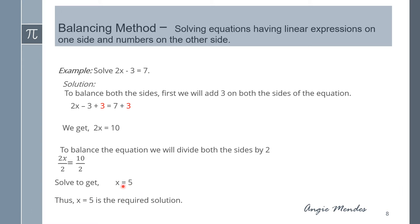We keep balancing the equation until we get only the variable on one side. We first balanced by adding, then by dividing, so that x is on one side and the solution on the other. So x is equal to 5 is the required solution.